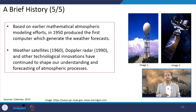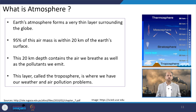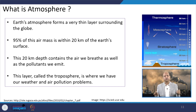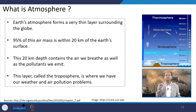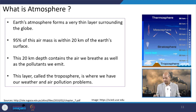When we try to understand the atmosphere, this earth's atmosphere forms a very thin layer surrounding the globe. About 95 percent of this air mass is within the 20 kilometers of the earth's surface. This 20-kilometer depth contains the air we breathe as well as the pollutants we emit. This layer called the troposphere is where we have all weather-related and air pollution-related problems — it extends to around 10 to 12 kilometers and up to about 20 kilometers in some places.